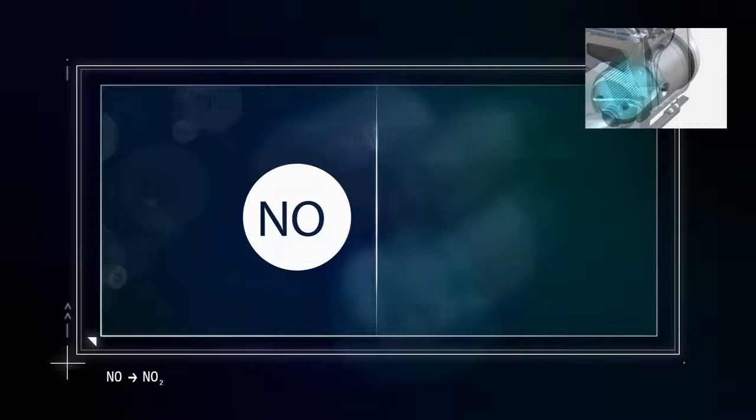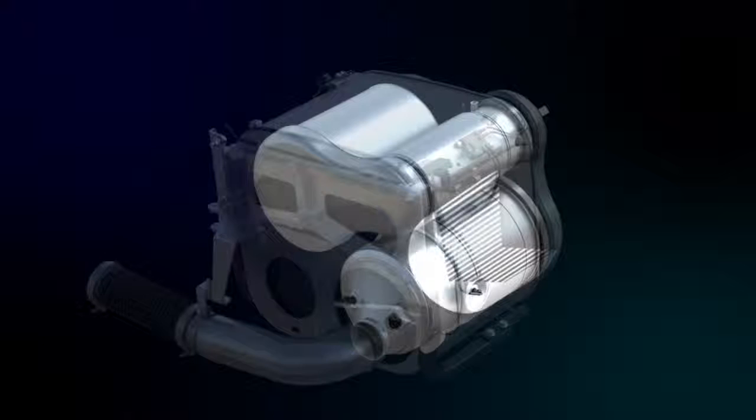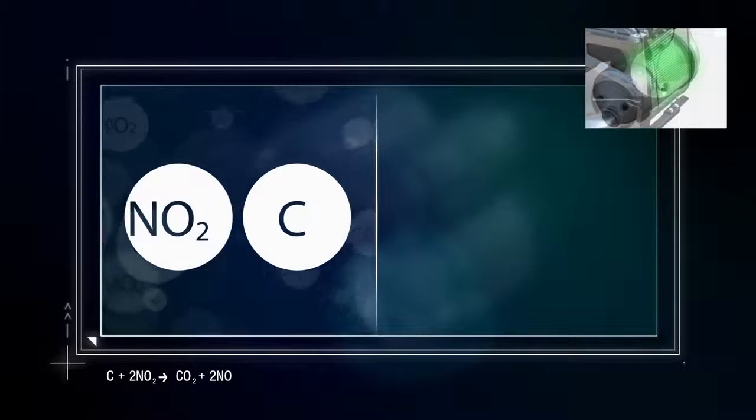The surface particulate filter that follows traps up to 99% of the particulate mass present in the exhaust gas stream. The soot particles trapped in the CRT filter are catalytically burned using the nitrogen dioxide produced beforehand and thus converted to carbon dioxide.